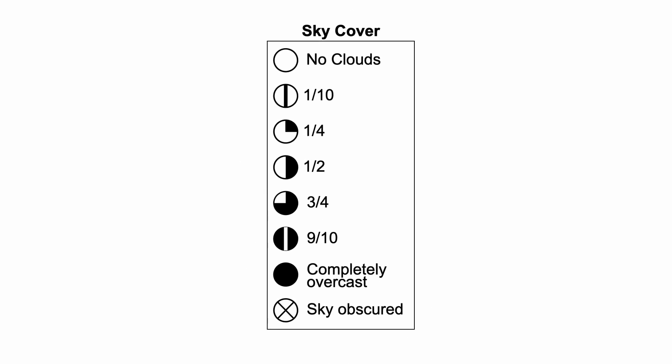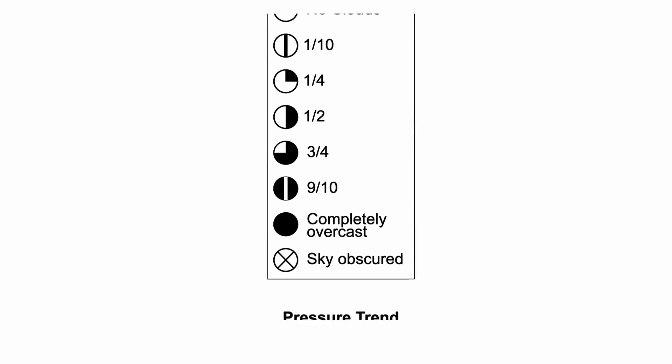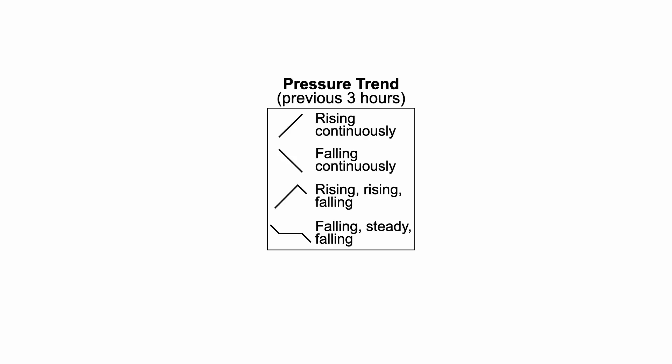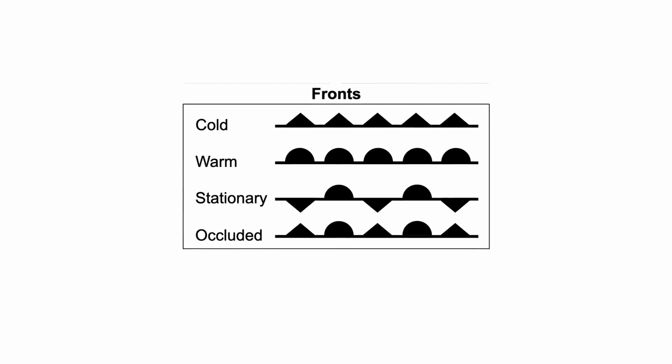Next up is cloud cover or sky cover. We saw one overcast example, and you can see the different ways to notate whatever the cloud cover happens to be. There are also symbols showing the pressure trend — rising, falling, rising then falling, etc. — which you use for the pressure trend portion of the station model. Then we have our fronts, which don't show up on station models but rather on weather maps: cold fronts, warm fronts, etc. Check out my other videos to learn more about weather fronts.